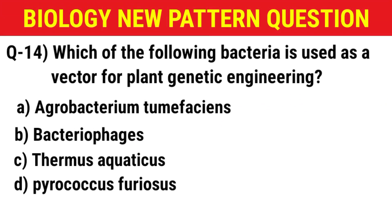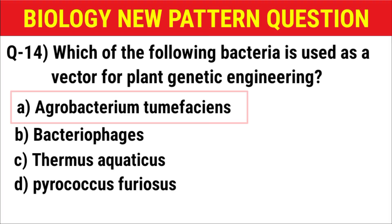Next question: Which of the following bacteria is used as a vector for plant genetic engineering? (A) Agrobacterium tumefaciens, (B) bacteriophages, (C) Thermus aquaticus, (D) Pyrococcus furiosus. The correct answer is option A: Agrobacterium tumefaciens.